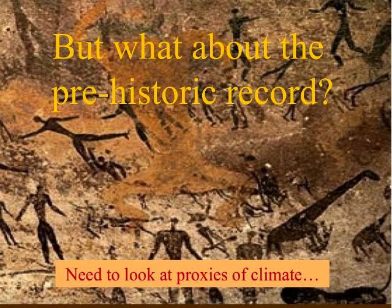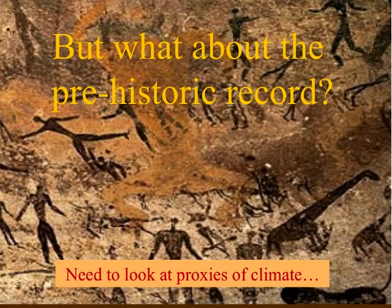To look further back, researchers must turn to the proxy record. A climate proxy is a record of something that has changed with changing climate — usually temperature and/or precipitation. Common proxies include oxygen isotopes from speleothems in caves, beetle part assemblages from sediment cores or exposures, and pollen assemblages reflecting past vegetation. The proxy Dr. Warner focuses on is sedimentological: sediment that originates from a glacier, is delivered to a lake system, and is deposited in the lake.